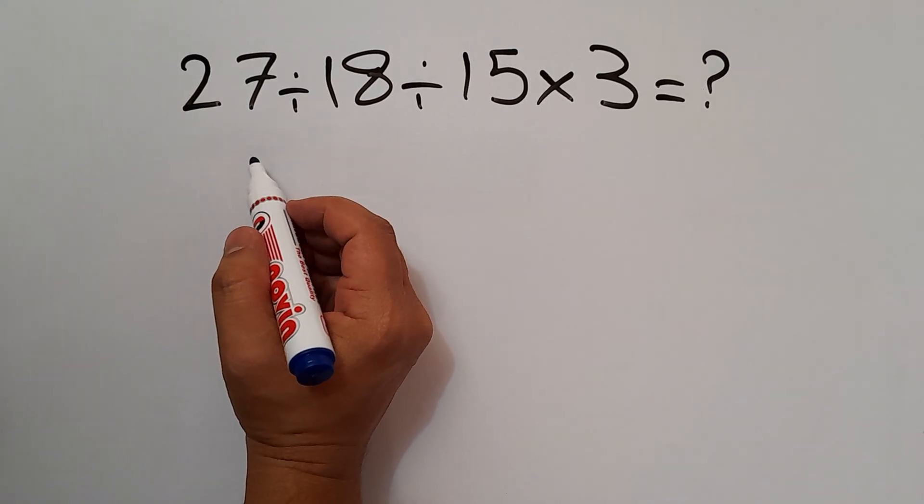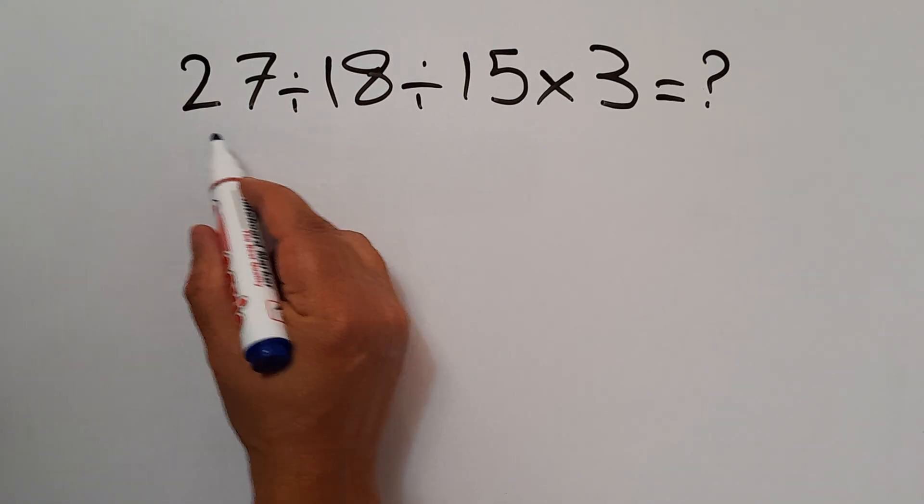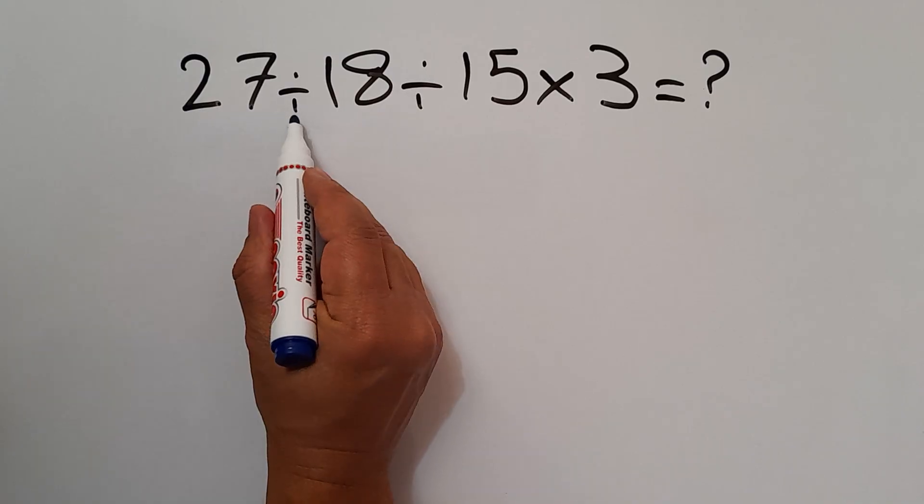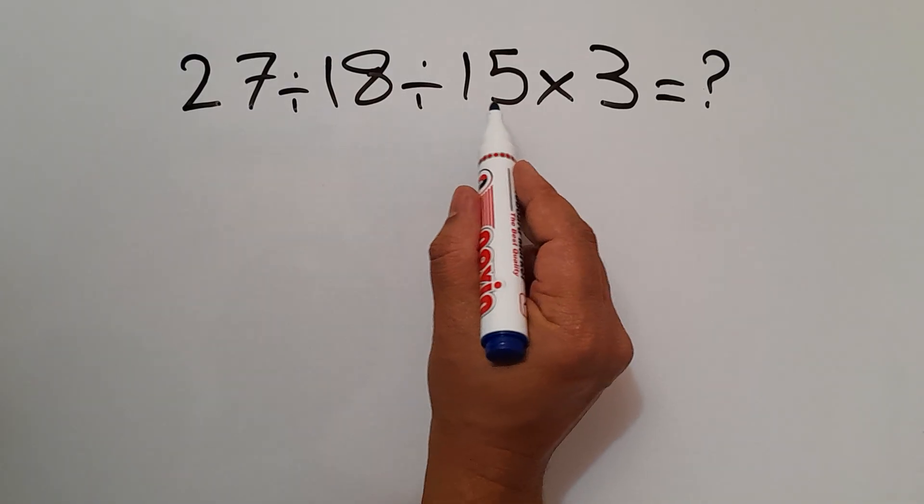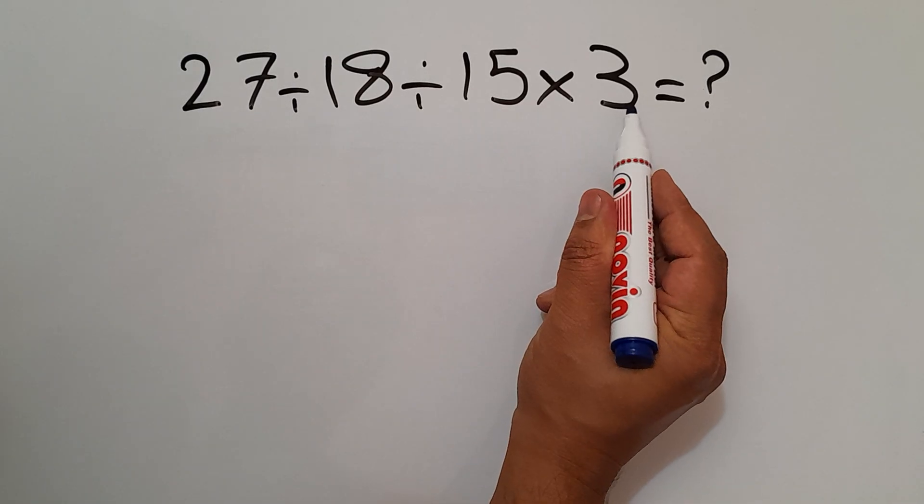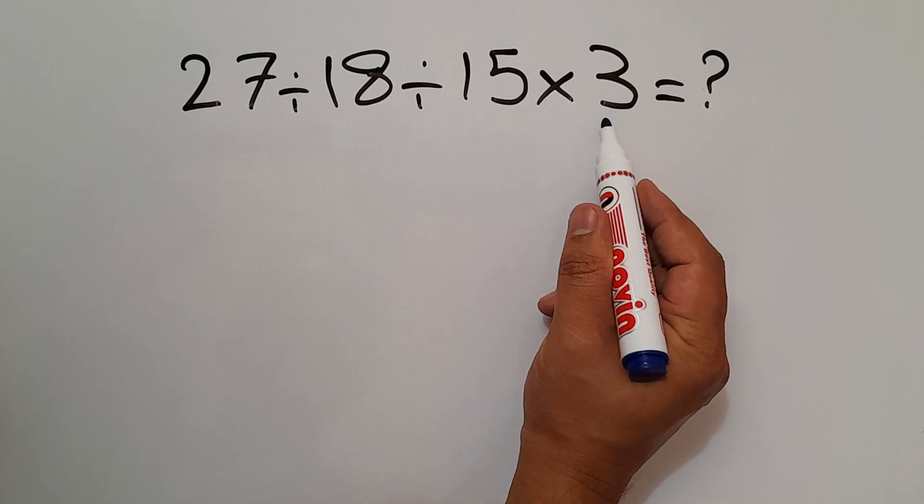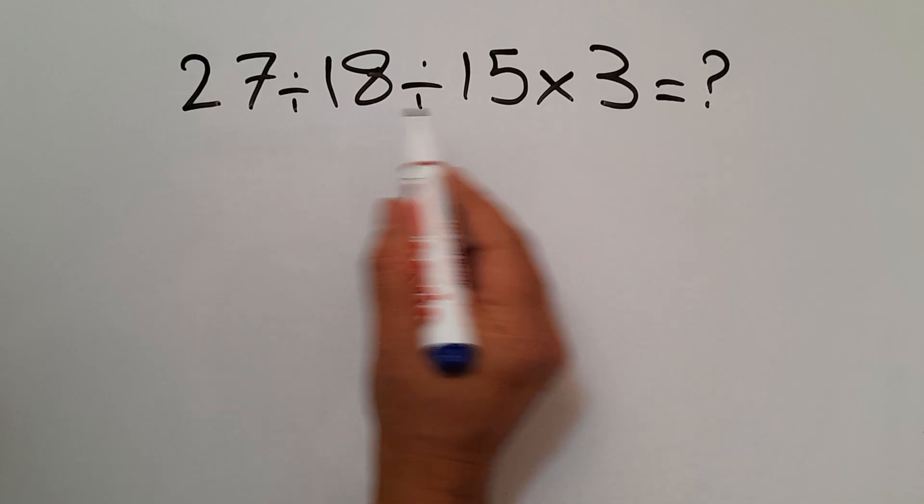Hey guys, welcome to Matho. In this video we want to find the value of this expression: 27 divided by 18 divided by 15 then times 3. Are you ready to solve? Let's go. In this expression we have two divisions and one multiplication.